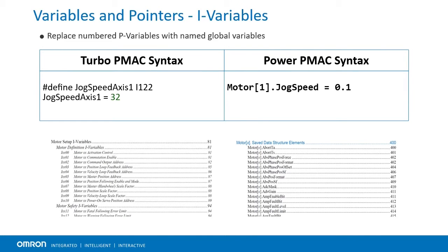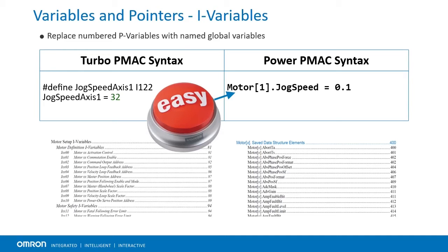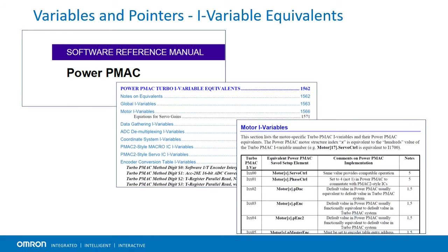In Turbo PMAC, numbered i-variables were used for system settings, and names were added with the pound define. In Power PMAC, these variables are ready-to-use structure elements built into the firmware, making it much easier to address different numbered system, gate, and motor elements. For a detailed list of which i-variables correspond to which Power PMAC structures, see the Power PMAC Turbo i-variable equivalents section of the most recent Power PMAC software reference manual. Note that there is not always a one-to-one equivalent between Turbo and Power setup variables. Motor setup i-variables for the first 32 motors are still available in Power PMAC where possible.